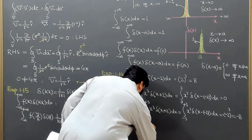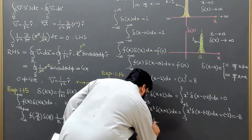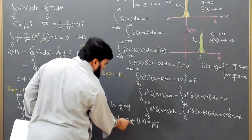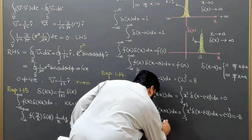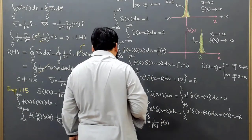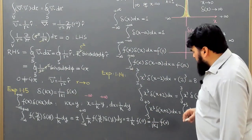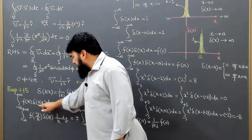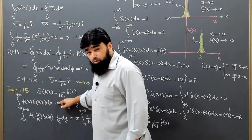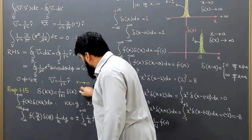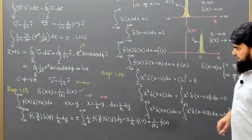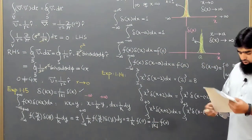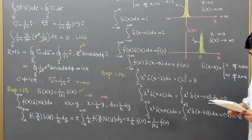Combining the ± sign with 1/k gives 1/|k|, so the expression equals (1/|k|) f(0). Since the integral from minus infinity to plus infinity of f(x) δ(x) dx equals f(0), this confirms that δ(kx) = (1/|k|) δ(x). This completes the proof of this corollary of the Dirac delta function.